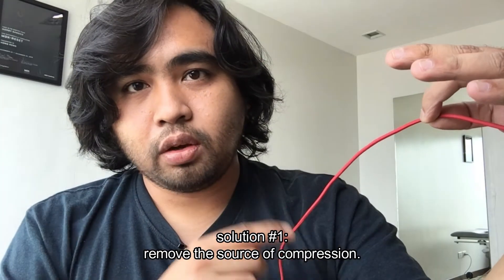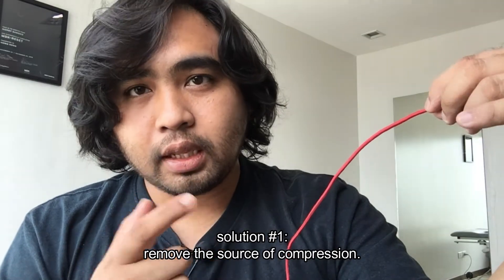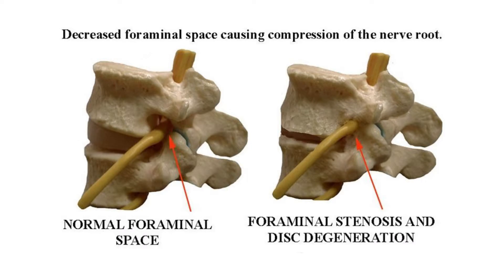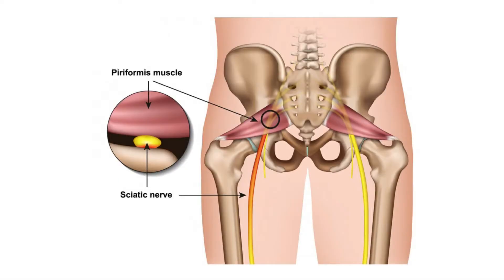The solution for nerve issues or nerve problems is to free up that compression. So if it's from the low back, it could be your disc causing it — a disc herniation causing compression on the nerve or nerve root. It could also be coming from an intervertebral foraminal compression, meaning the spaces in your low back are shortened or got smaller, causing compression on the nerve. If it's from the hips or piriformis, the piriformis muscle is tight and it's compressing the sciatic nerve.